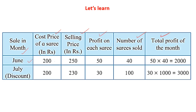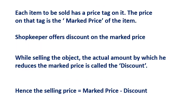In June, the price of the saree is 200 rupees cost price, and the selling price is 250 rupees — that means 50 rupees profit per saree. 40 sarees sold, total profit is 2000 rupees. In July, a discount was given: the selling price was reduced from 250 to 230 rupees — 20 rupees less — so profit became 30 rupees per saree. But interestingly, because of the discount, more sarees were sold, and total profit became 3000 rupees. So giving a discount increases the shopkeeper's overall sales.